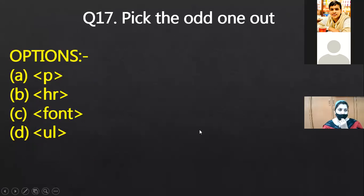Pick the odd one out. P is container, font is container, UL is again container. So HR is the empty tag. So that was the odd one out.